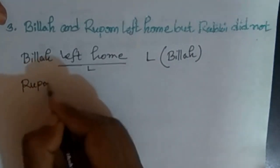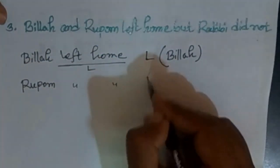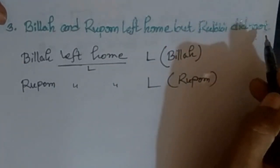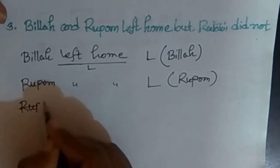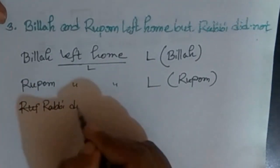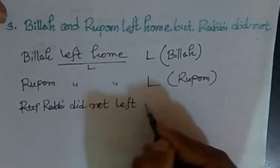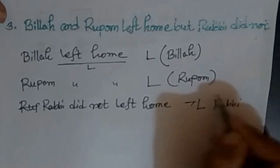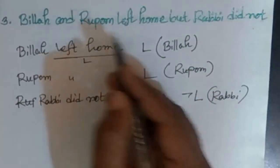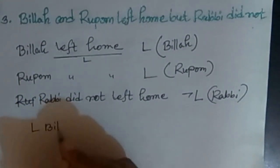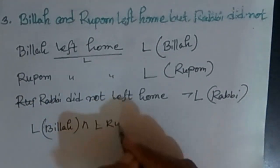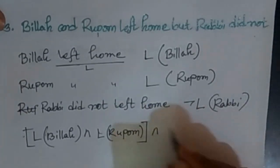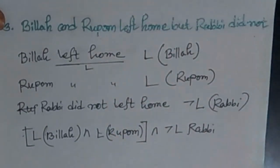The root home is the same as left home — that means L(root home). That means RABBI did not left home. So let's take a look at RABBI: RABBI did not left home. And finally we have the predicate logic notation: L of RABBI. And not L of RABBI.